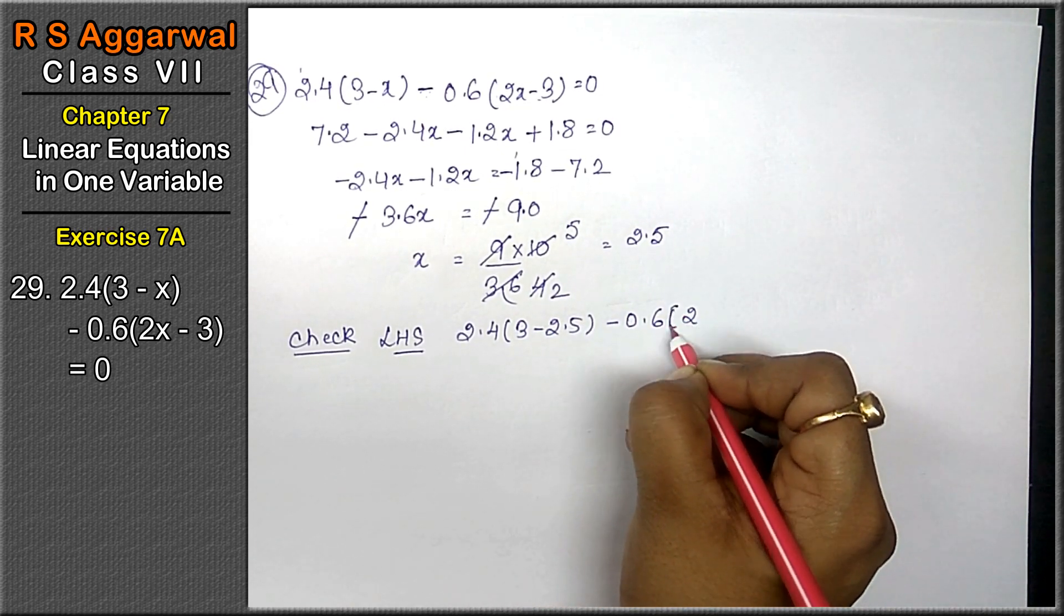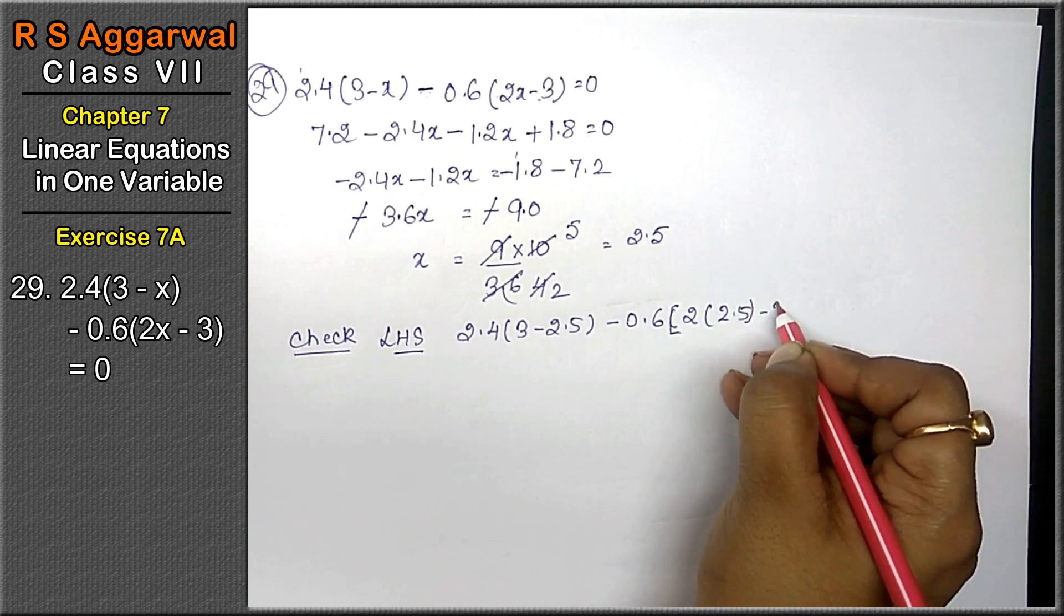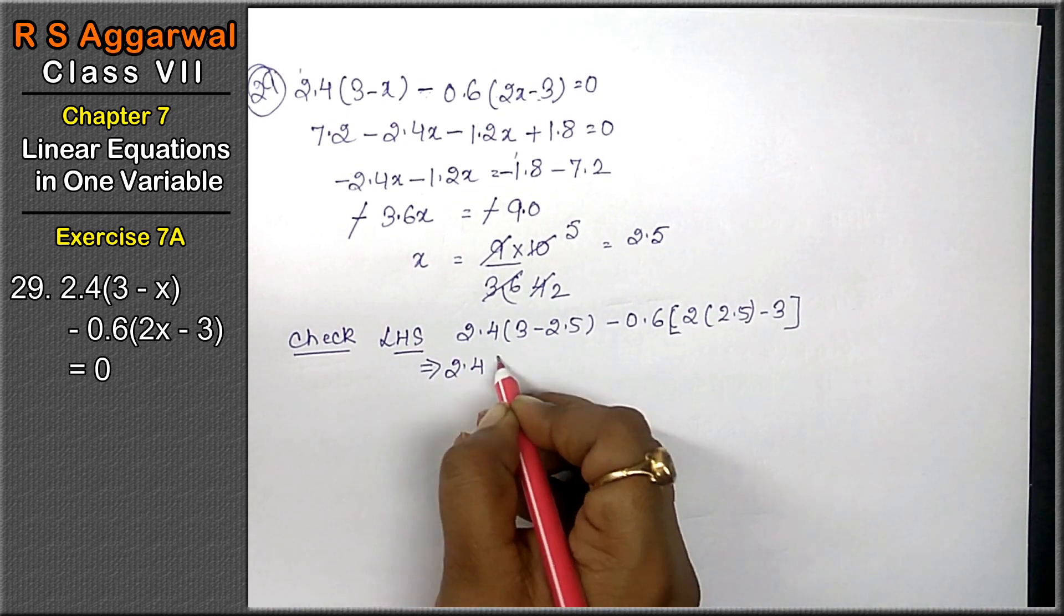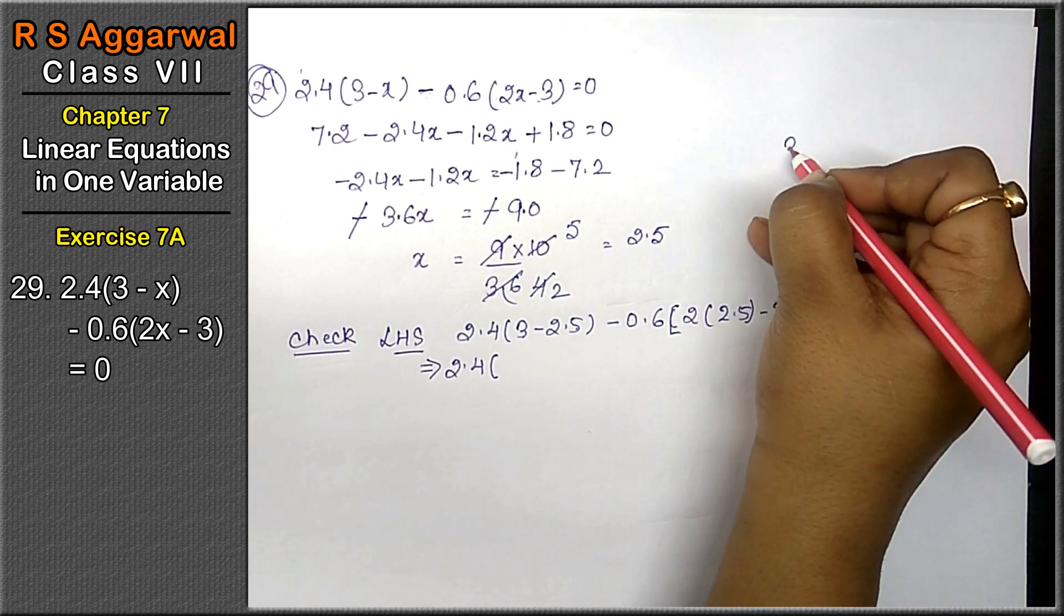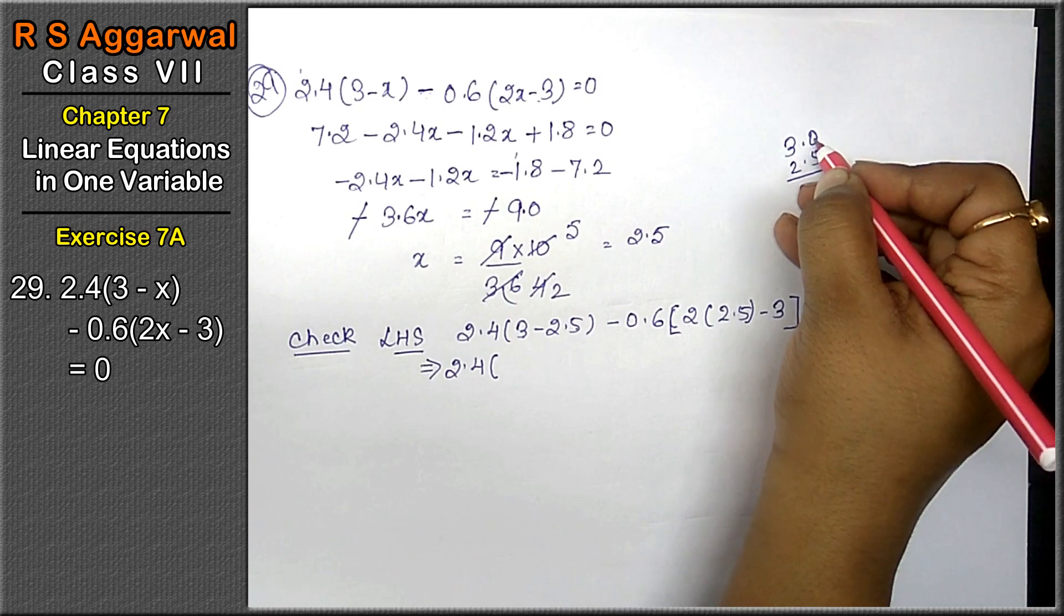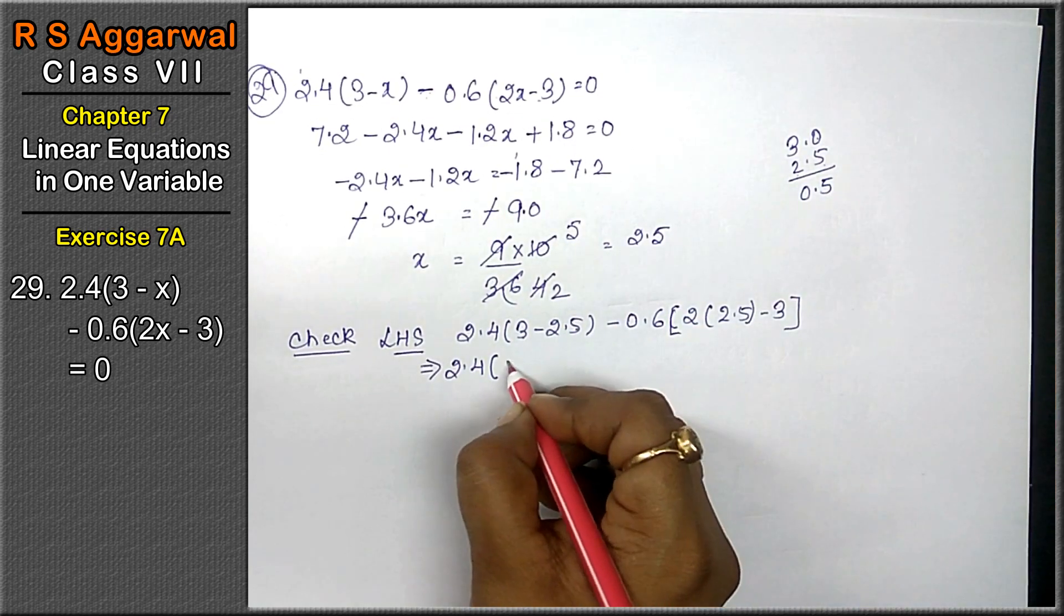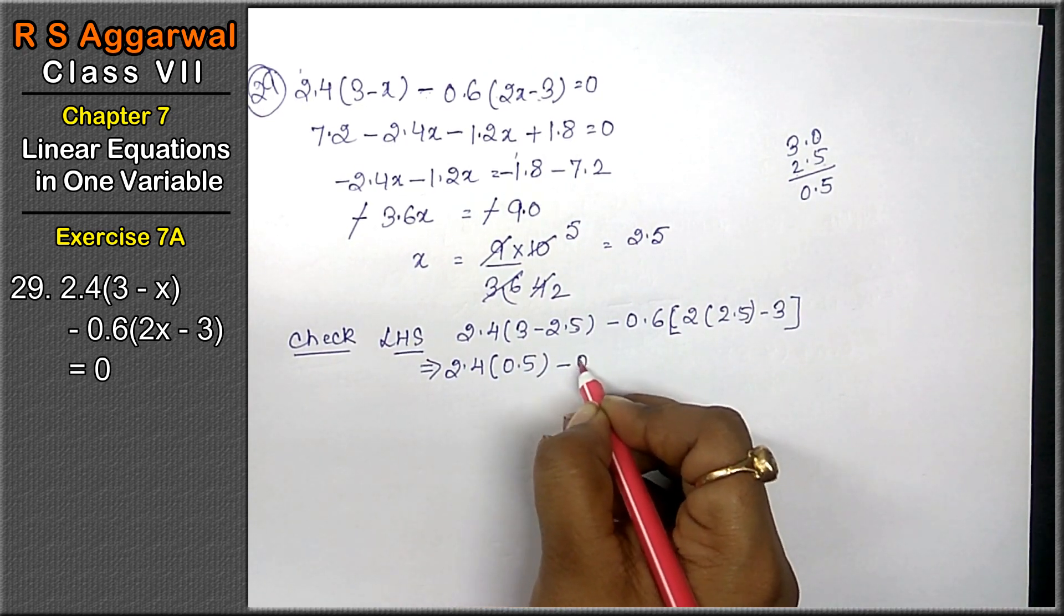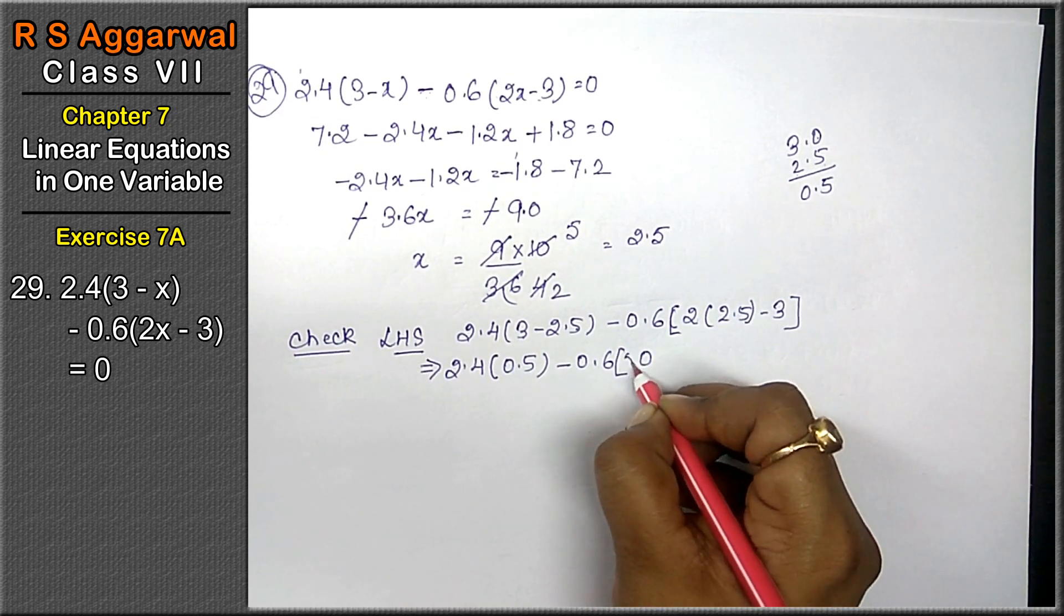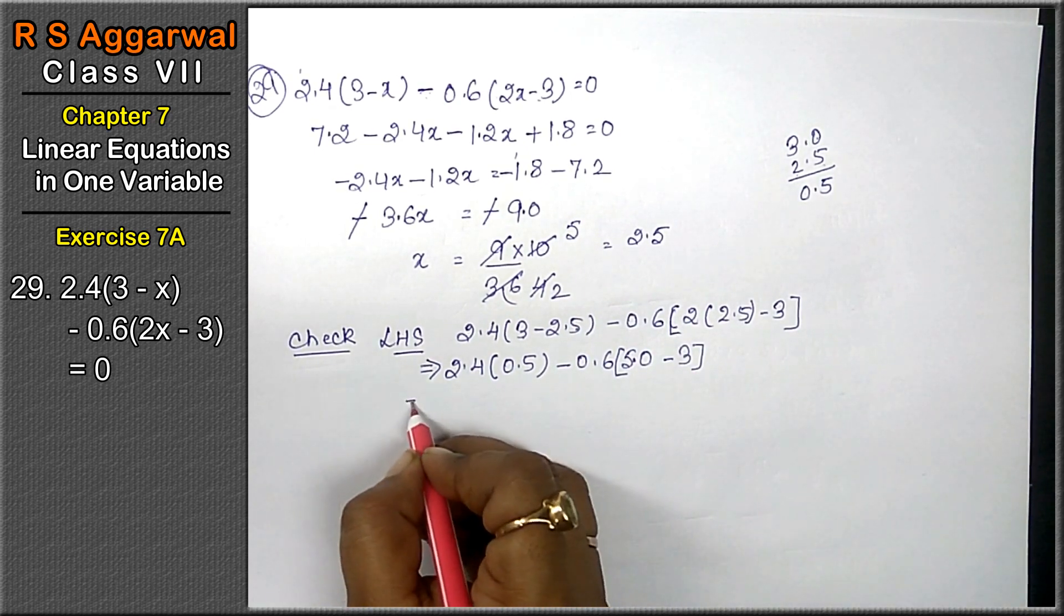Let's check. Left hand side is 2.4(3 - 2.5) - 0.6(2 × 2.5 - 3). That is 2.4(0.5) - 0.6(5 - 3), which equals 2.4(0.5) - 0.6(2).